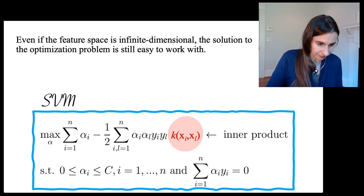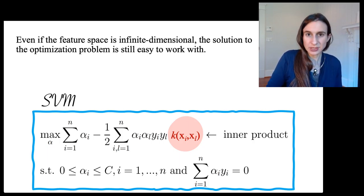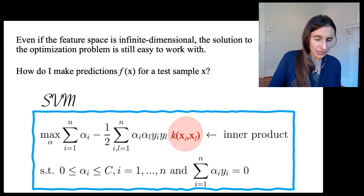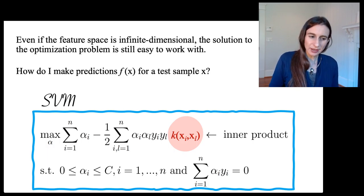We have those alpha_i stars. The question is, how can I then use the alpha_i stars to make predictions f(x) for a new test sample x?